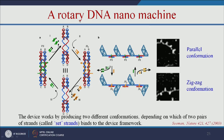The next example is the rotatory DNA nanomachine. This device works by producing two different conformations — parallel and zigzag — using two pairs of strands called set strands. These set strands bind to single-stranded DNA to produce parallel or zigzag conformation. If the set strands match the size of the single-stranded DNA, it produces parallel conformation; if slightly bigger, it forms a zigzag conformation. The DNA acts as fuel — based on the DNA, it will have rotatory motion.